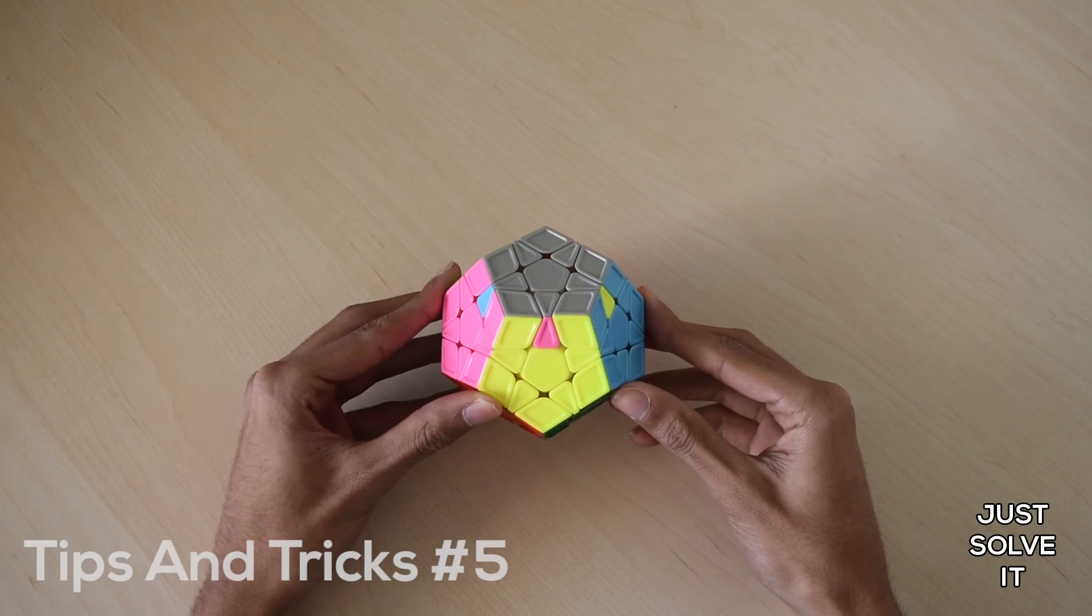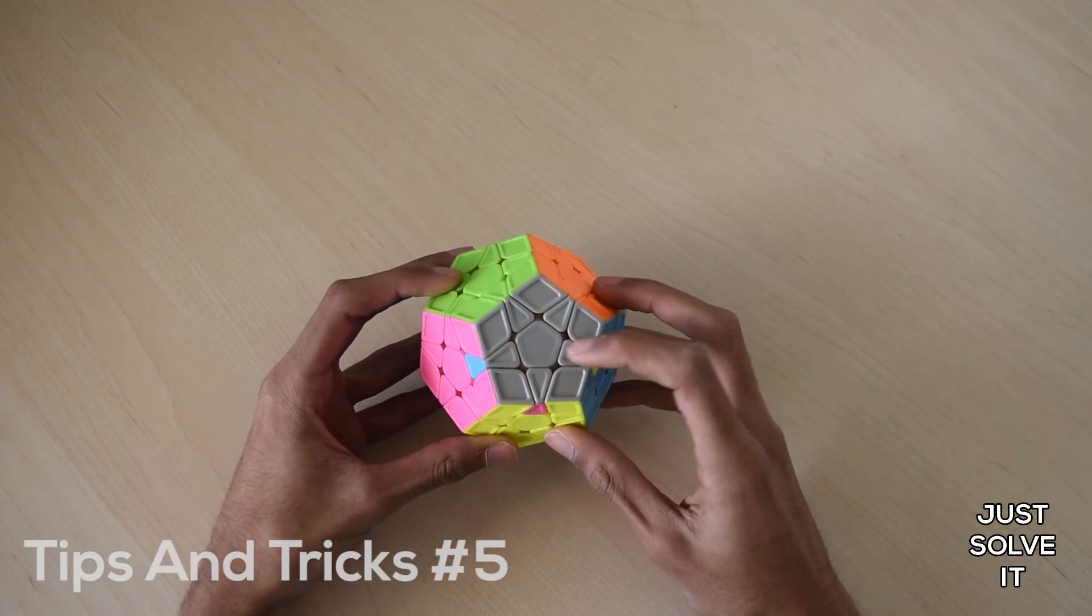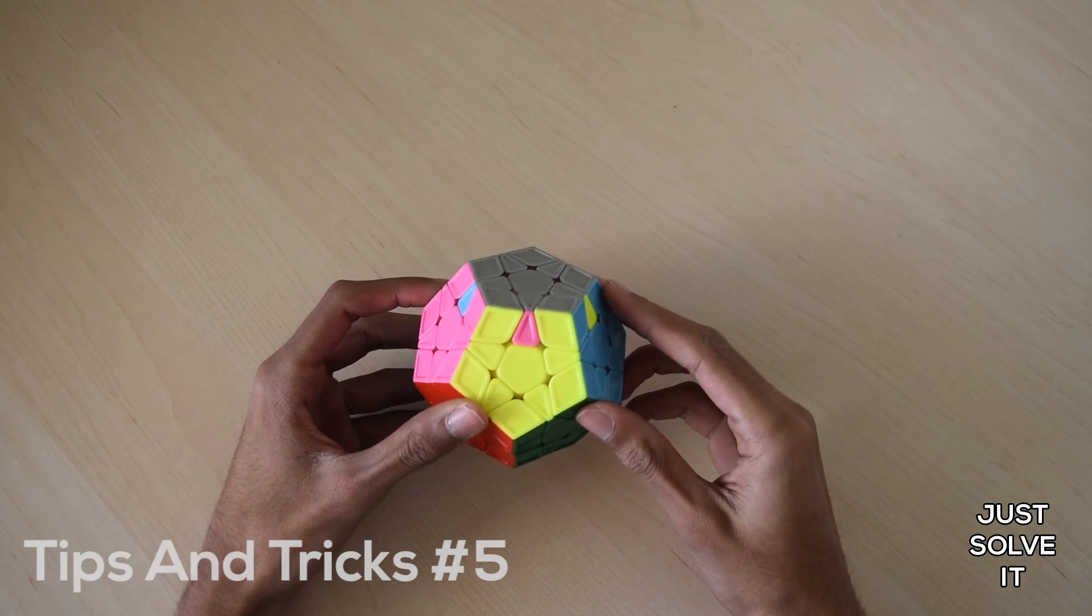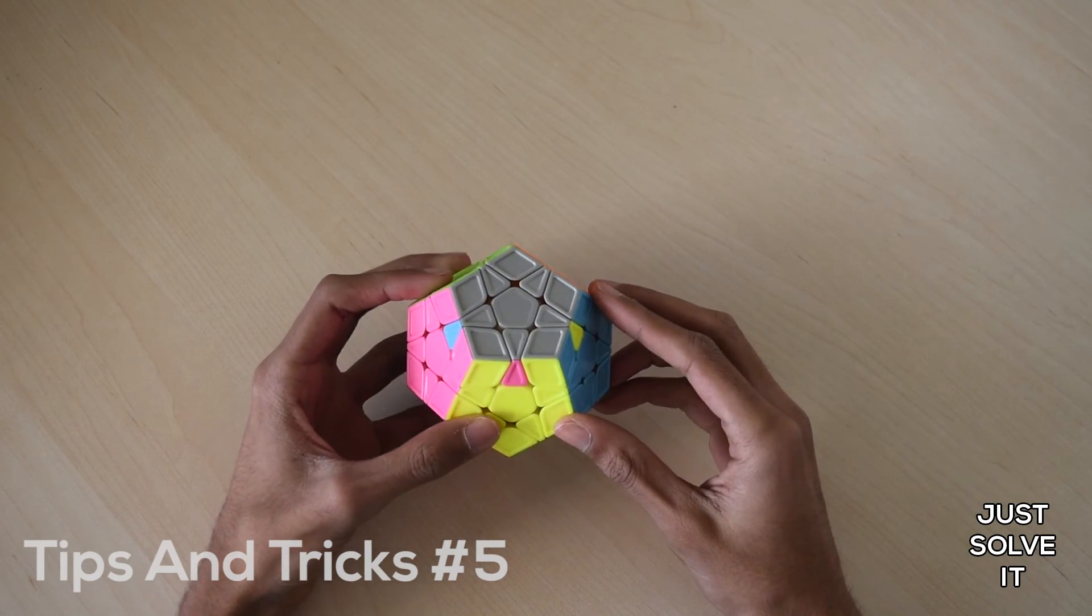So this is the first case, it's a U-perm with the three edges in the front, and the edges need to go clockwise. To solve this case, you're going to hold it like this and do this algorithm.